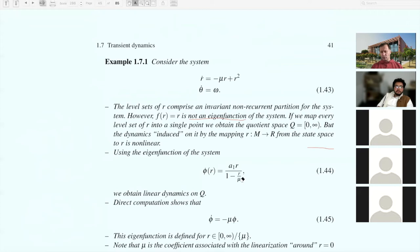We can obtain a partition that gives us dynamics that is linear if we found an eigenfunction. It's easy to check that this phi, which is one over R divided by one minus R over mu, is actually an eigenfunction. What you get by direct computation is that phi dot equals minus mu phi. So that linearizes the dynamics.